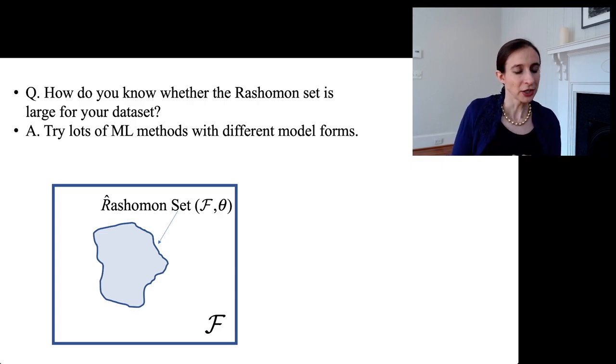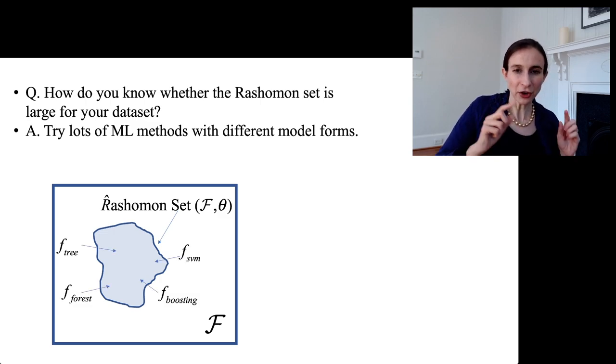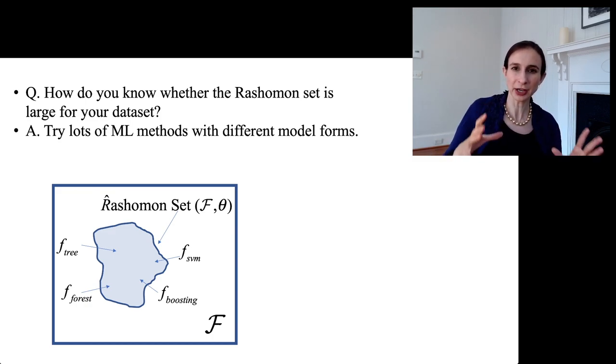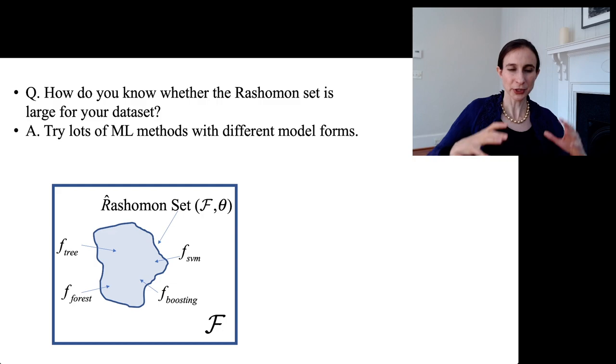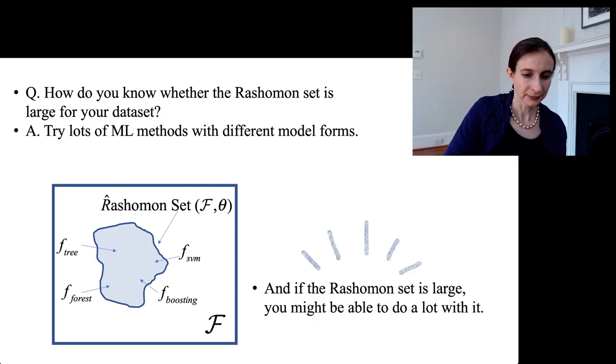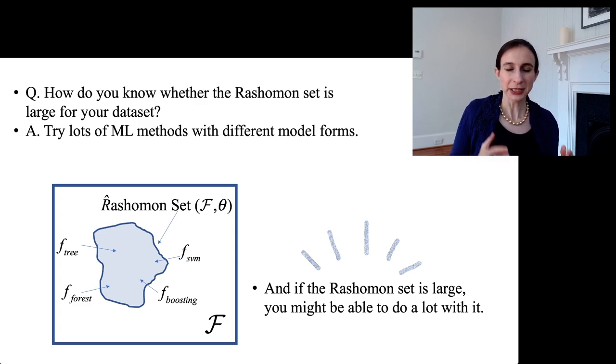Okay, so her answer is you can try lots of different machine learning methods with different model forms. If they all end up giving you about the same accuracy, that probably means that the Rashomon set is large enough to accommodate solutions from all of them, which means the Rashomon set is probably large. And she says if the Rashomon set is large, that might lead to a huge number of possibilities of things you could do with that large Rashomon set. So let's talk about what some of those possibilities could be.